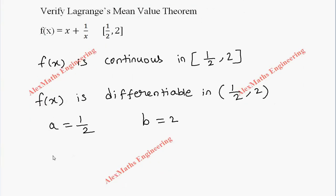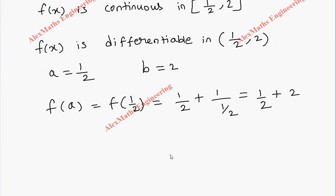Let's find f(a) which is f(1/2). We have to substitute 1/2 in place of x in the function. Then the first term comes as is and this 2 will come to the numerator. After taking LCM, we get 5/2.